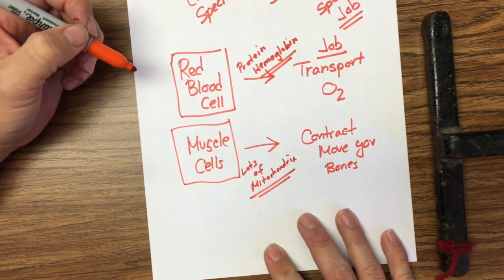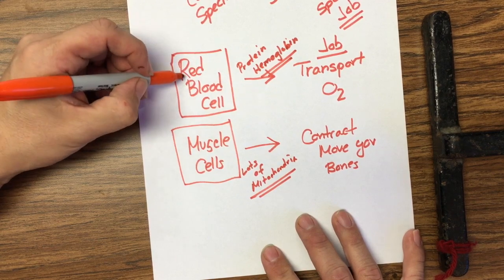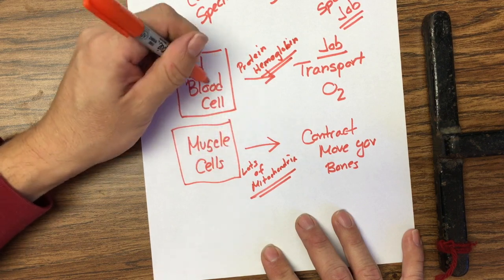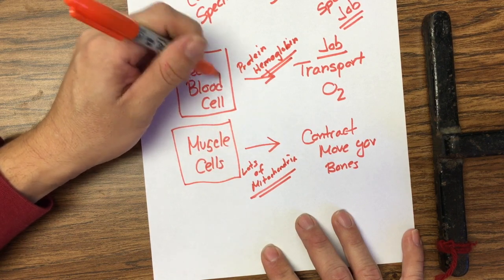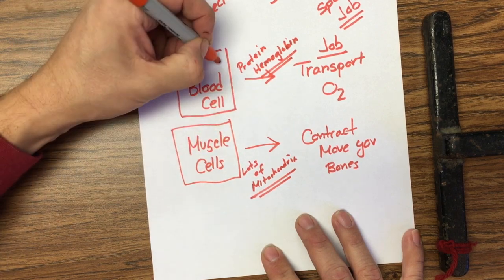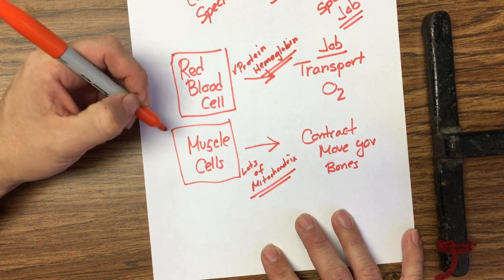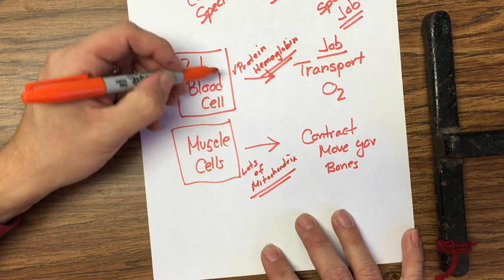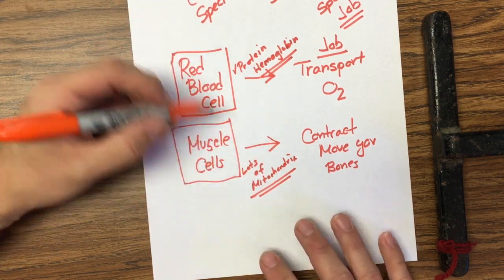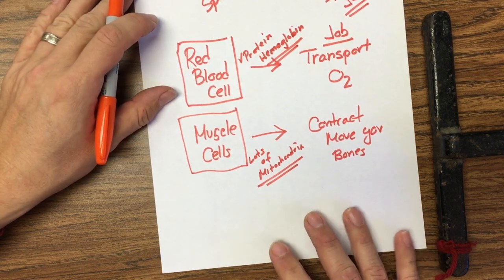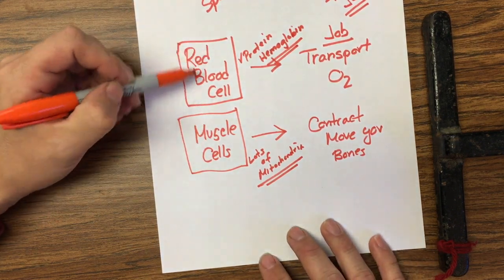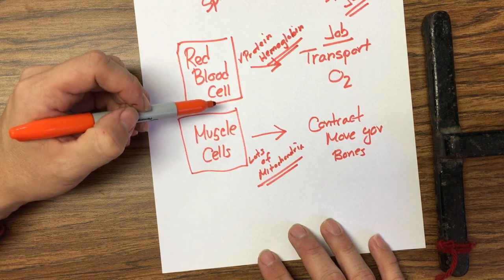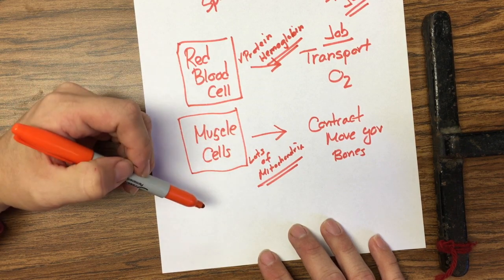Muscle cells don't make hemoglobin. Cells have specific jobs, so what happens inside them is slightly different. They all have the same organelles, but the red blood cell builds special proteins while the muscle cell has more mitochondria because it needs more energy. On the test, make sure you understand that cells have special jobs and therefore need different tools.